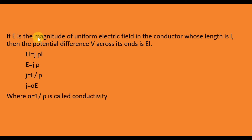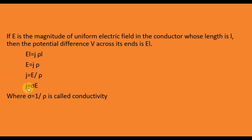If E is the magnitude of the uniform electric field in the conductor of length L, then the potential difference across its ends is V = EL. Substituting into V = ρJL, we get EL = ρJL, and cancelling L gives E = ρJ, or equivalently J = E/ρ = σE, where sigma = 1/ρ is called the conductivity.